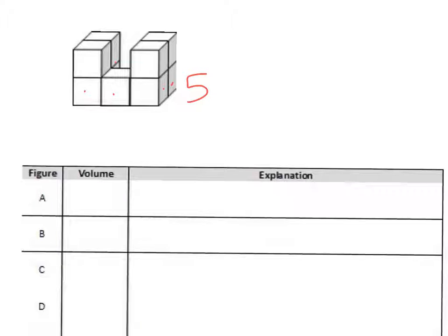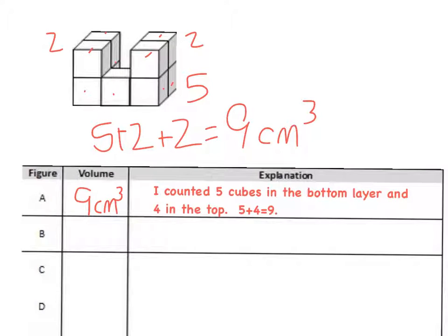And then the top, they're easier to see. So there's 1, 2. And there's 1, 2. For a total of 5 plus 2 plus 2, which again is 9 centimeters cubed. For my explanation, I said I counted 5 cubes in the bottom layer and 4 in the top. And 5 plus 4 is 9.